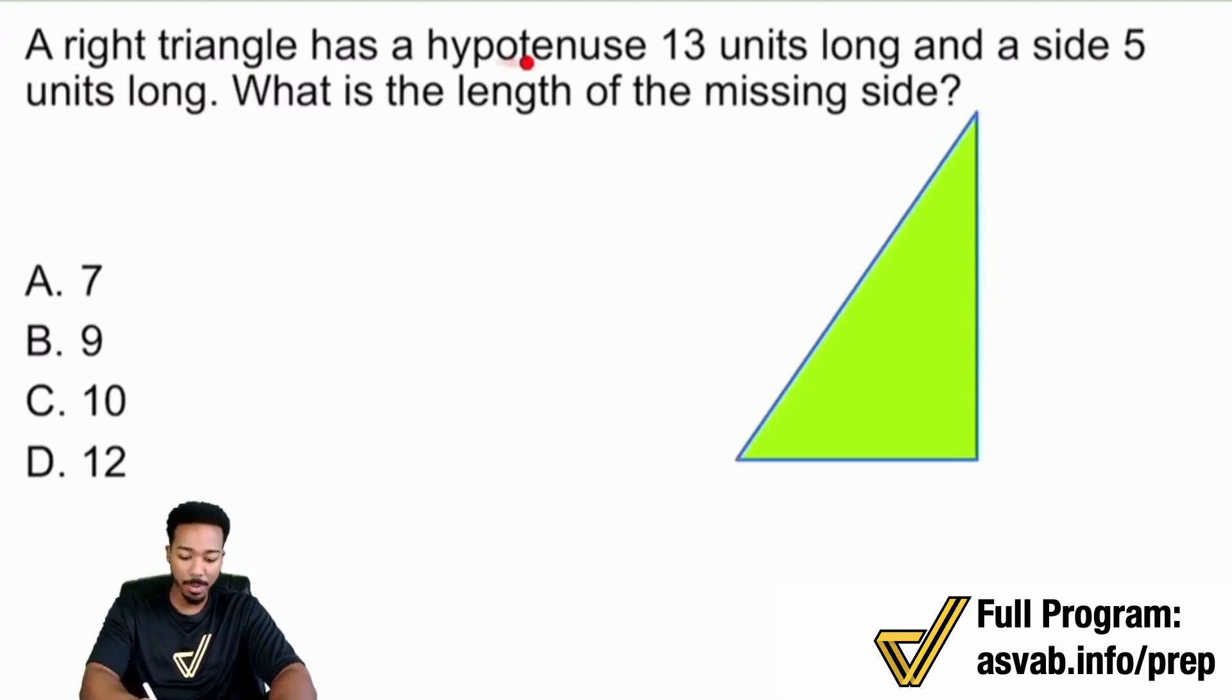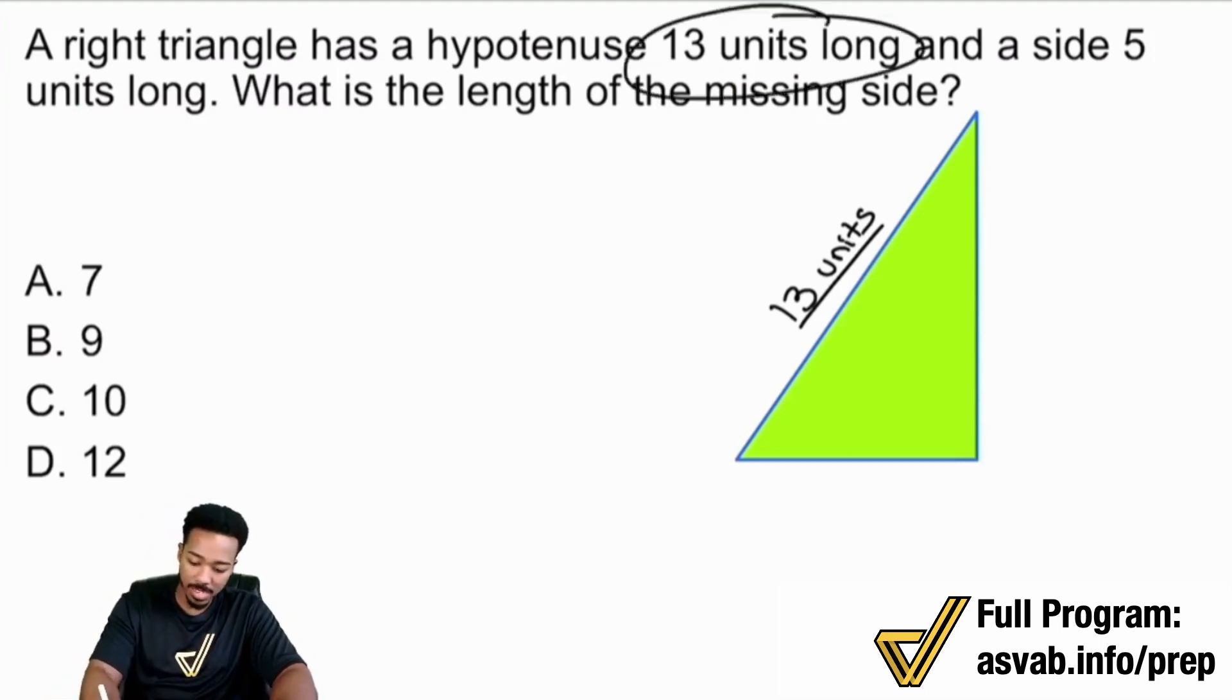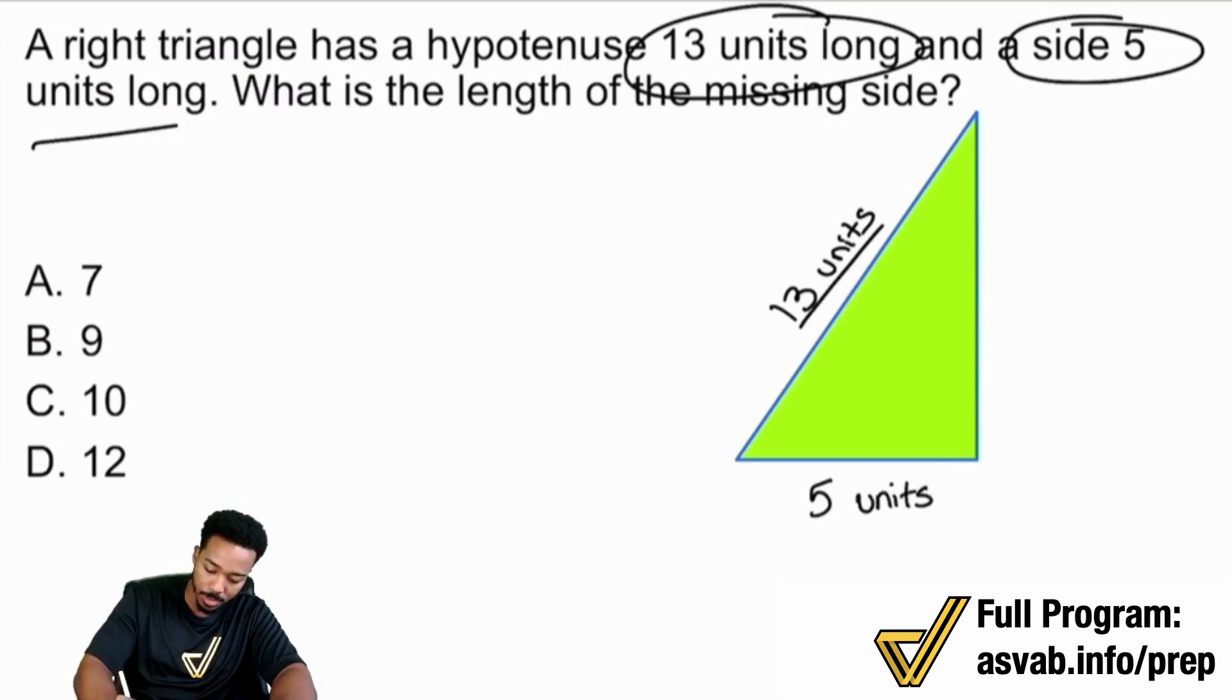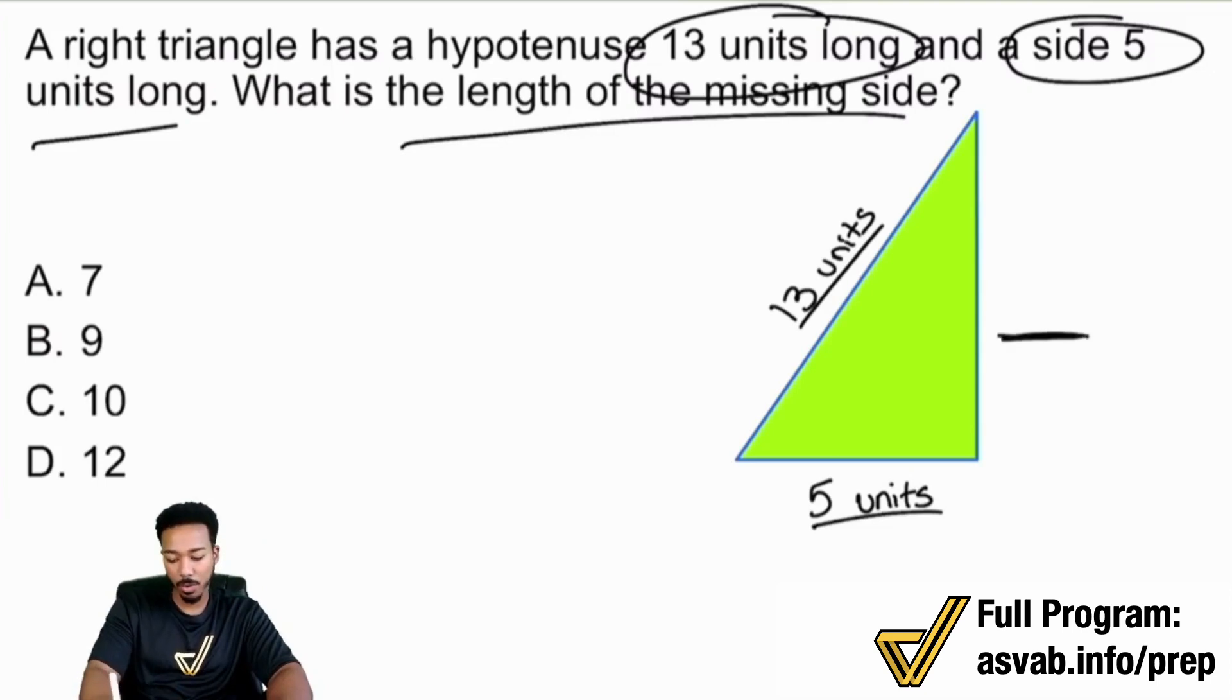And it says it has a hypotenuse of 13 units long. So my hypotenuse is 13 units right there. And then it says I have a side five units long. So I'll just make this five right here. And then we want to know what the length of the missing side is. Right there. I'll call that x units.